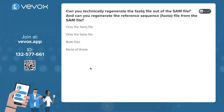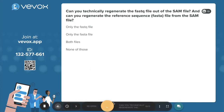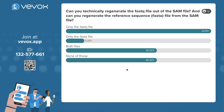A question: given only the SAM file, can you regenerate the original FASTQ file, or the original FASTA reference file? The correct answer is: only the FASTQ file. You cannot regenerate the FASTA reference from the SAM file, but you can regenerate the FASTQ file. This is because the SAM file stores the read name, the sequence, and the base quality — everything that was in the FASTQ file — and this is indeed often done in practice.